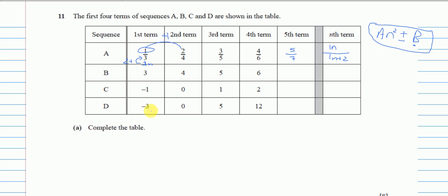For part b — 3, 4, 5, 6 — that's very simple. They increase by one, so it's 1n. To find the constant, compare n (which gives 1) with the first term 3: to get to 3 we add 2. So the formula is n + 2.